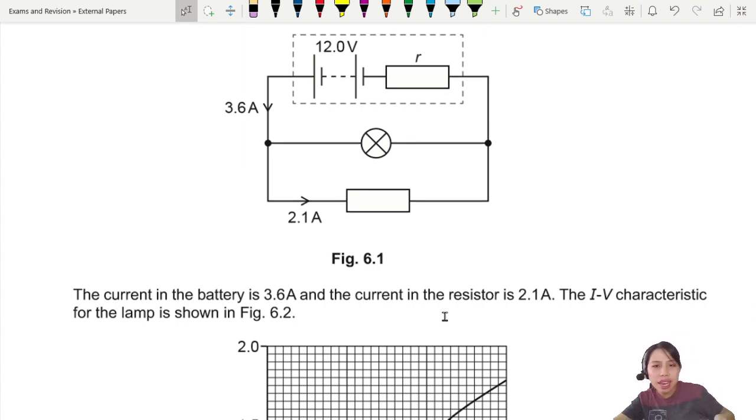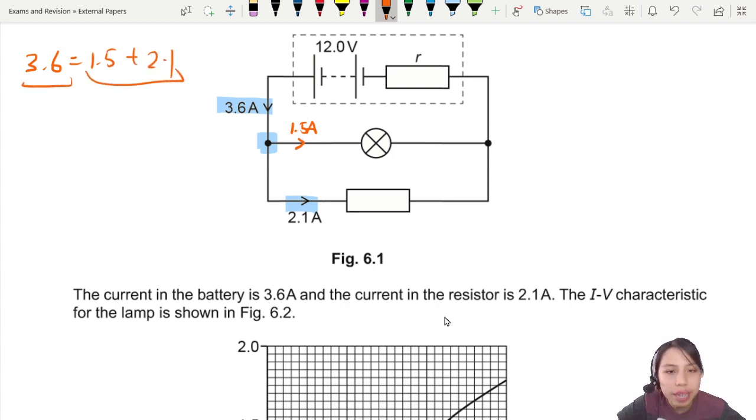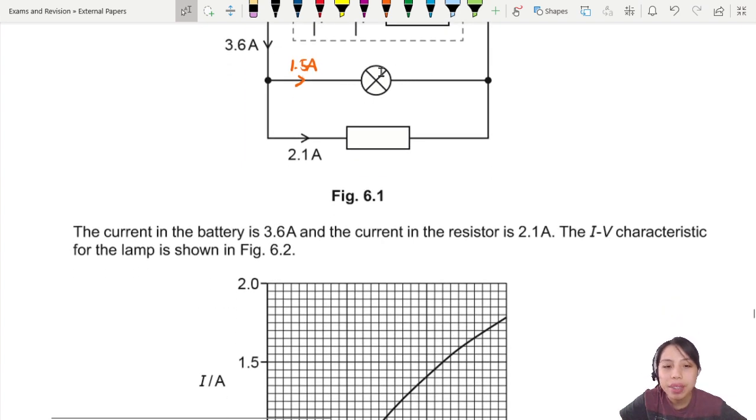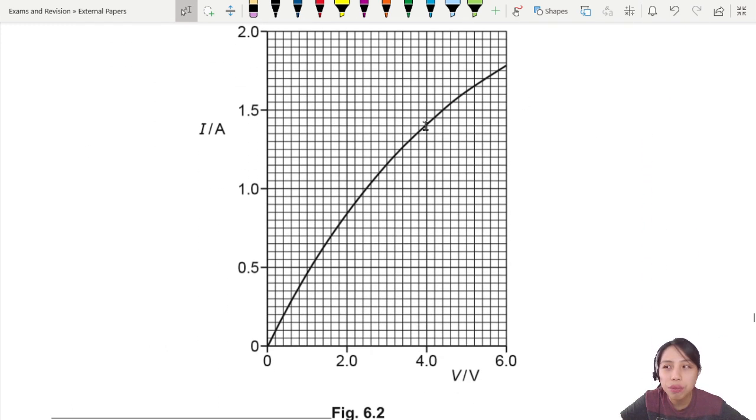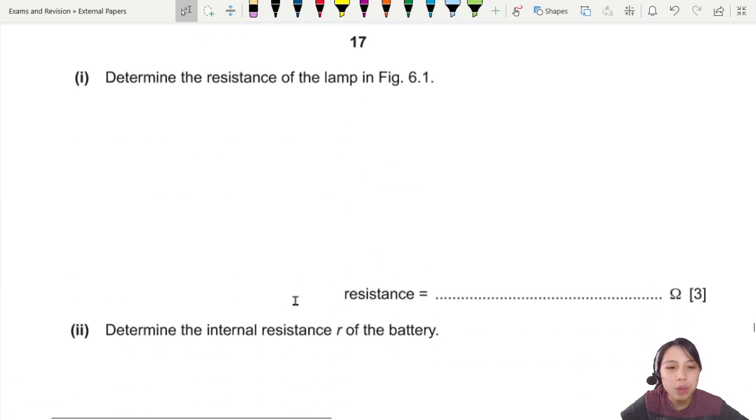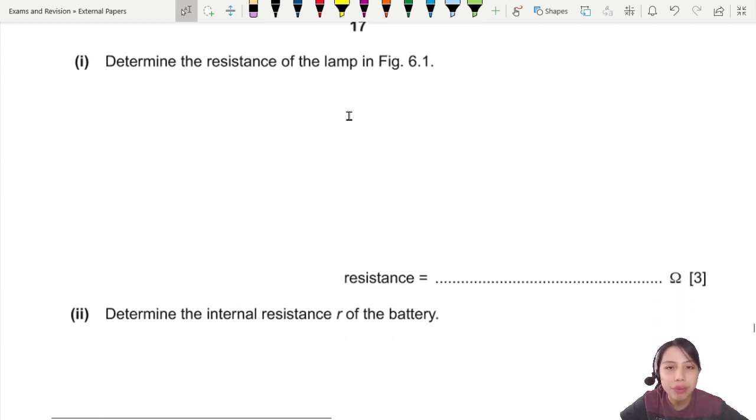Before I even go to the question, I want to look at this diagram a little bit. We just talked about Kirchhoff's law. 3.6 going into a junction, 2.1 come out. Don't forget this line. There's also one more current here and that will be 1.5 amps. 3.6 equals 1.5 plus 2.1. This is like a jigsaw puzzle. This filament lamp, the resistance will change depending on the current through it and the voltage. So they give us this IV characteristic curve for the lamp.